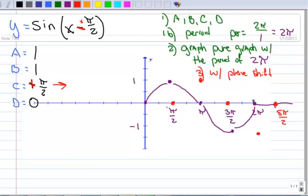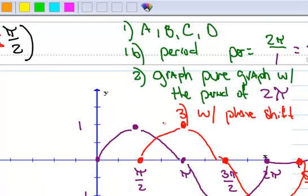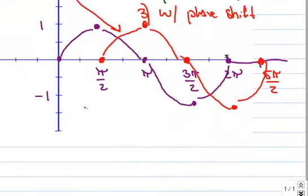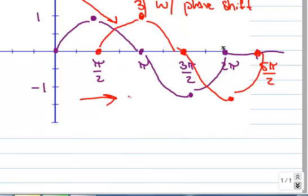So now that I've moved my critical points to the right pi over 2, now I'm going to connect them. And then this red one here, that's the graph of the sine of the quantity x minus pi over 2.